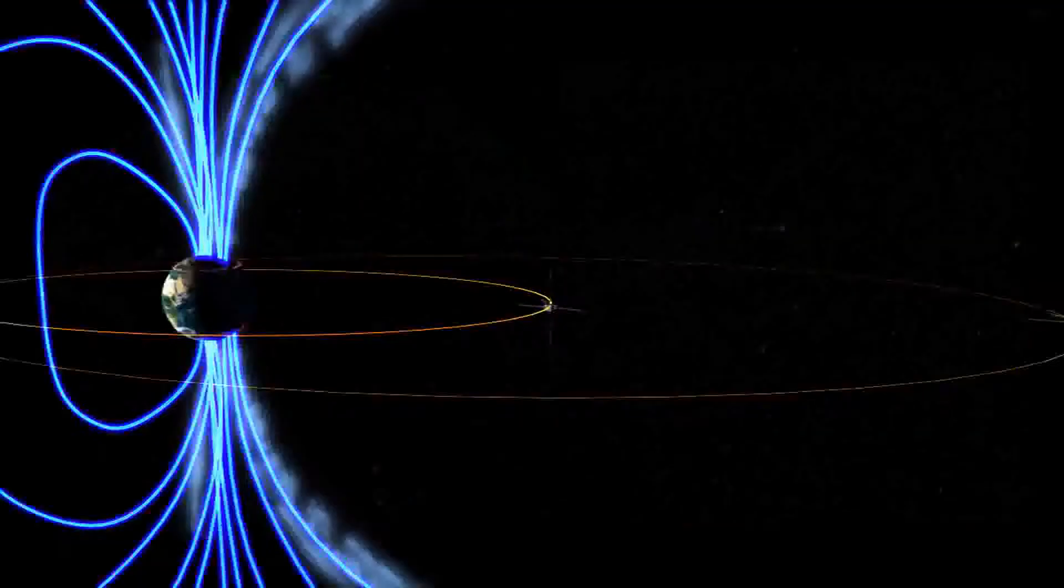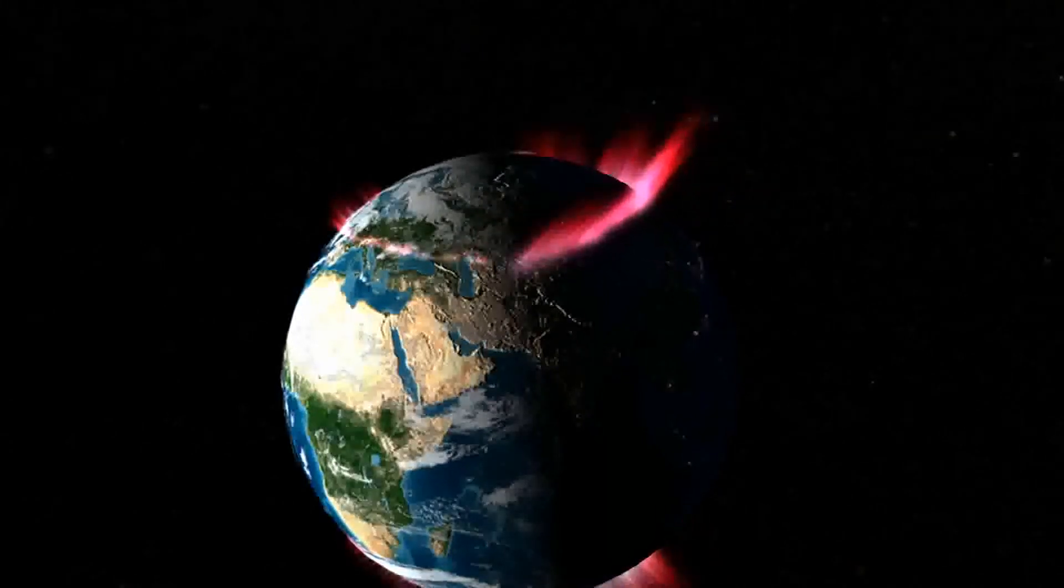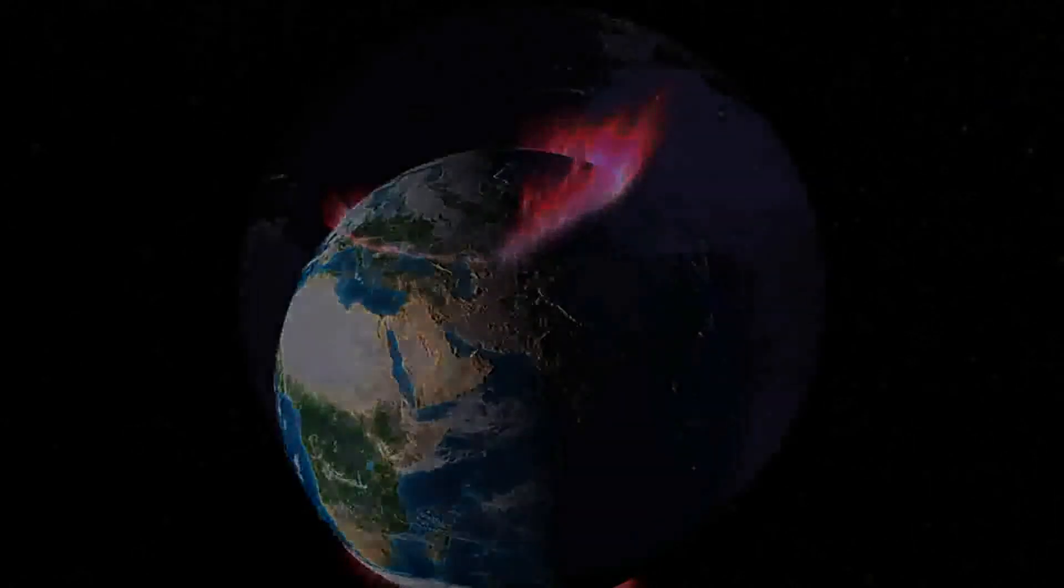A powerful X-class flare like that can create long-lasting radiation storms, which can harm satellites, and even give airline passengers flying near the poles small radiation doses. X-flares also have the potential to create global transmission problems and worldwide blackouts.